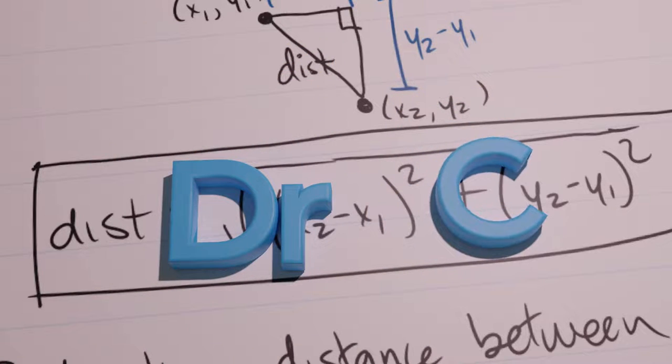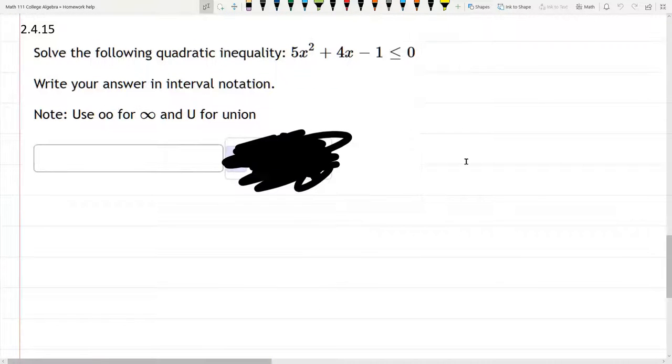This problem is a quadratic inequality, and we're going to solve it by graphing. So just looking at this function right here, it is a parabola that's happy.